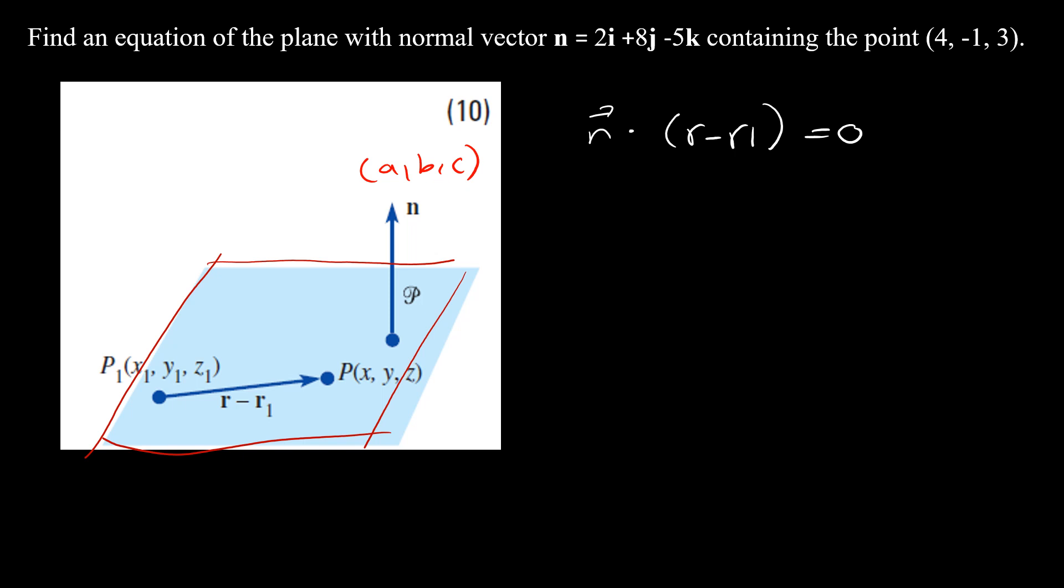And if you compute that, so here the components of the vector n is a, b, c. And here, if you do the r minus r1, so the point P here is (x, y, z) and P1 is (x1, y1, z1). So if you do r minus r1, this gives us x minus x1, y minus y1, and z minus z1. And here we have the vector n with components a, b, c.